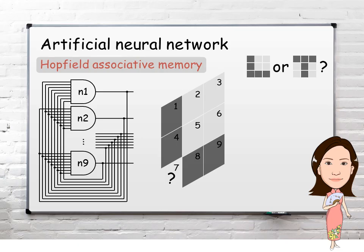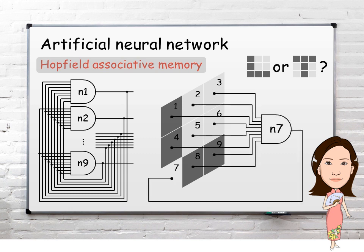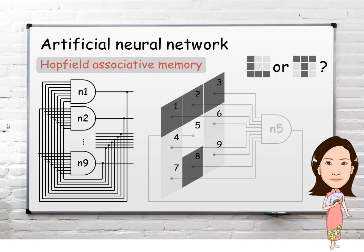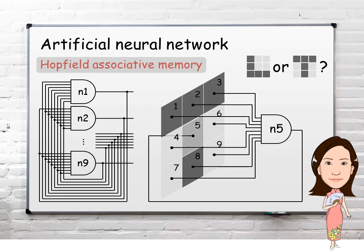For example, if the bottom left pixel is missing, neuron 7 will take information from the other eight neurons, calculate the linear threshold function, and in this case decide that its own state should be dark. In a different case, when the middle pixel is missing, neuron 5 will survey its neighbors and decide that its own state should be dark.